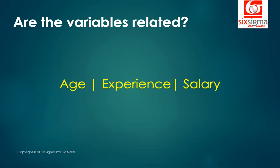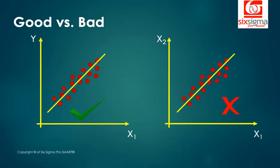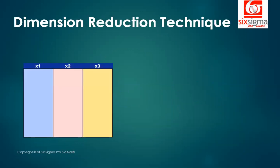You will not be adding any additional explanatory power to your models if you add all these correlated variables. The important takeaway is: if we add redundant variables, it won't help us improve our model. We are happy to have our dependent variable correlated with our independent variables, but we do not want our independent variables correlated with each other.